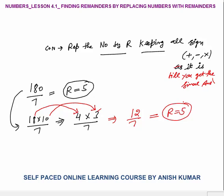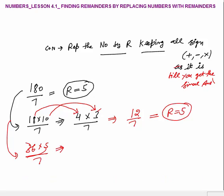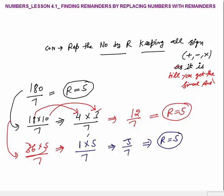Another example: 36 into 5 divided by 7. Replace number with remainder — 36 divided by 7: 7 fives are 35, remainder is 1. 5 divided by 7, remainder is 5. Multiply: 1 into 5 is 5, divided by 7, remainder is again 5. So the answer is still the same.